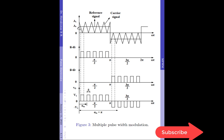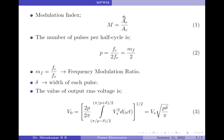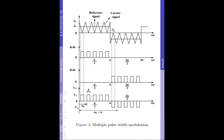Coming back, the ratio of the reference signal amplitude AR to the carrier signal amplitude AC is called the modulation index. The modulation index acts as the control variable at the output, and its value varies from 0 to 1, controlling the width of the gate drive pulses generated.